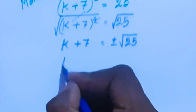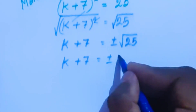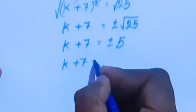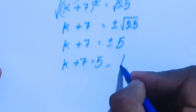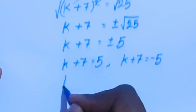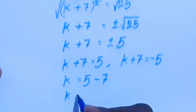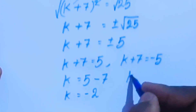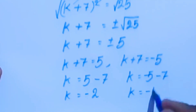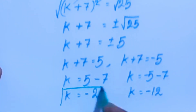We have k plus 7 equal to plus or minus the square root of 25, which is plus or minus 5. So k plus 7 equal to 5 gives k equal to 5 minus 7, which is k equal to minus 2. And k plus 7 equal to minus 5 gives k equal to minus 5 minus 7, which is k equal to minus 12. These are the possible answers in the second method.